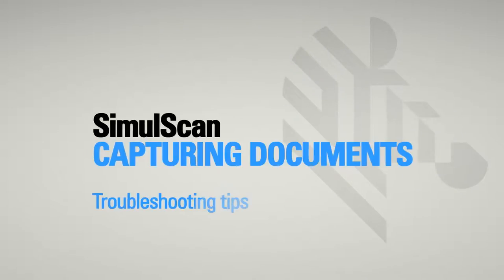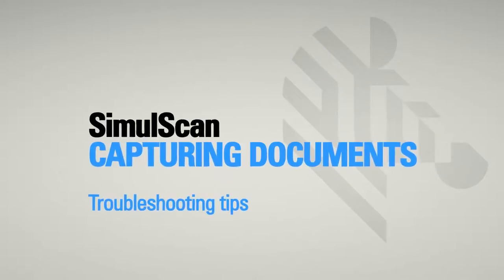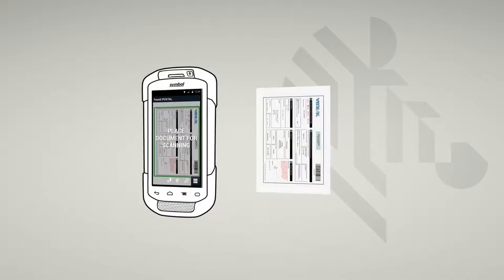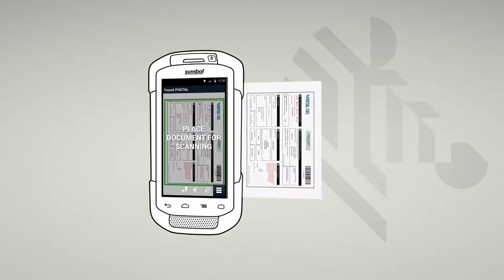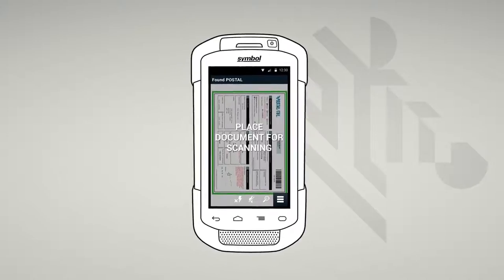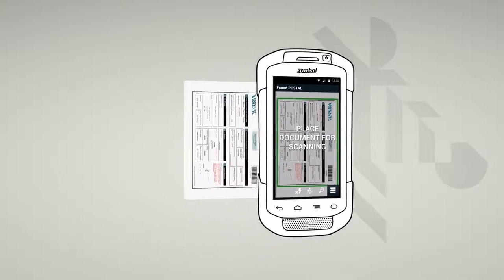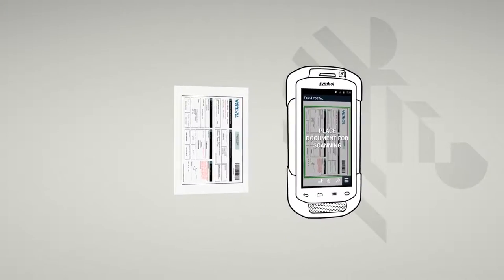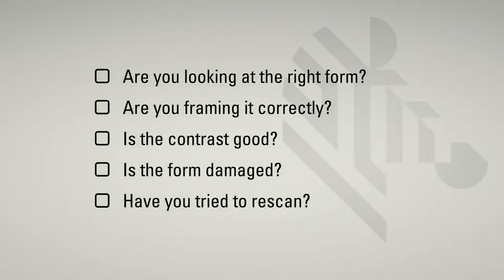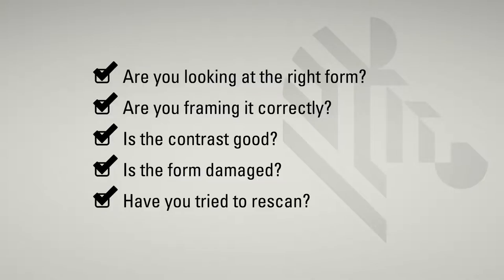It's that easy. Here are some troubleshooting tips. SimulScan will always try to identify, then process your document. If, for some reason, you don't see the green frame or you're unhappy with the results of your scan, please check the following: Are you looking at the right form? Are you framing it correctly? Is the contrast good? Is the form damaged? Have you tried to rescan? If you are still having problems, please contact your organization's IT support.